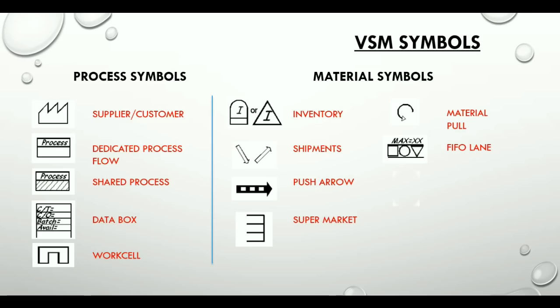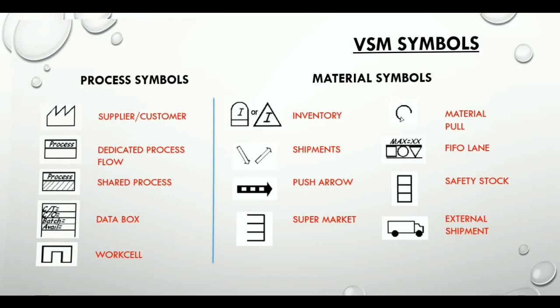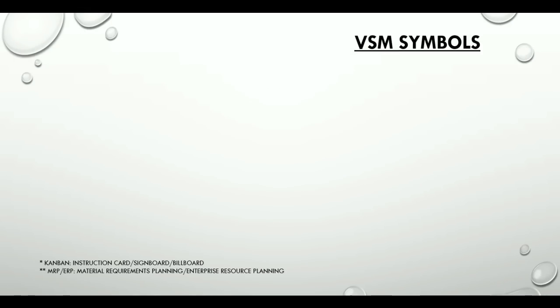The safety stock icon represents an inventory hedge against problems such as downtime, protecting the system against sudden fluctuations in customer orders or system failures. The external shipment icon represents shipments from suppliers or to customers using external transport.